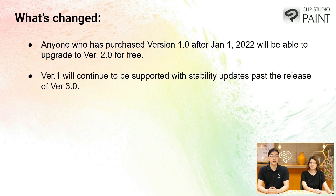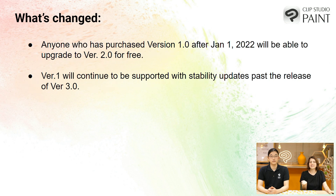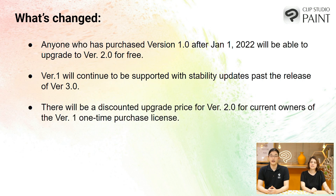A lot of people wanted to keep using their version 1 licenses for as long as possible, so we are going to be providing stability updates past the release of version 3. When version 3 comes out, everyone can be excited to see what new features await them and decide if they want to go from version 1 to version 3 at their own pace, because you're not going to have to worry about guaranteed stability. Also, previously there weren't any options for a one-time purchase upgrade from version 1 to version 2.0, but now we've added it and you will be able to upgrade at a discount. Later we'll show you a list of all the pricings.